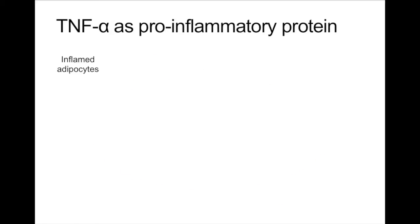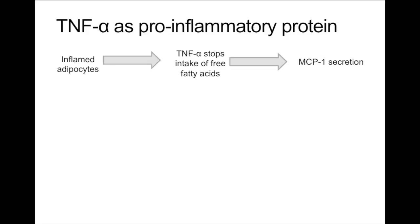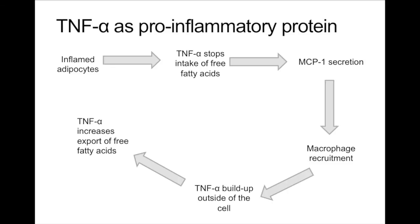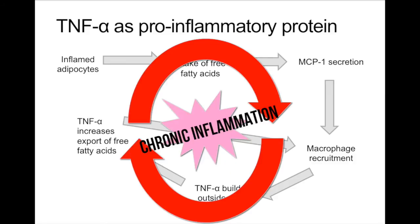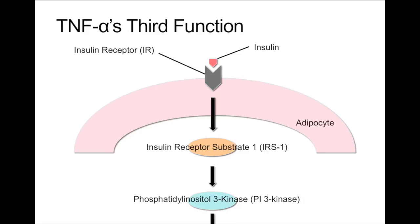Understanding these two functions explains why TNF-alpha has been regarded as a pro-inflammatory protein. Because TNF-alpha decreases the intake while simultaneously promoting the release of free fatty acids, the adipose tissue is always in a state of chronic inflammation. The continual production of TNF-alpha exacerbates this phenomenon. Nevertheless, the overproduction of TNF-alpha poses a far greater problem than simply the destruction of adipose tissue. The inundation of TNF-alpha leads to insulin resistance in adipose tissue through the serine phosphorylation of both the insulin receptor and the insulin receptor substrate 1 (IRS-1).